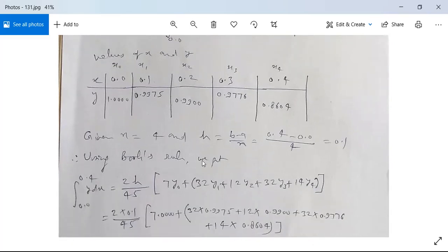Now using Boole's rule, we get integration from 0.0 to 0.4 y dx is equal to 2h/45 times [7y₀ plus 32y₁ plus 12y₂ plus 32y₃ plus 14y₄].